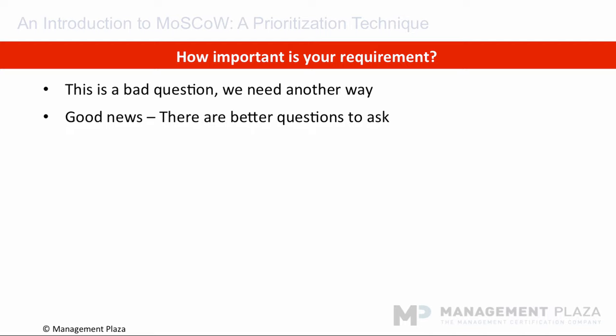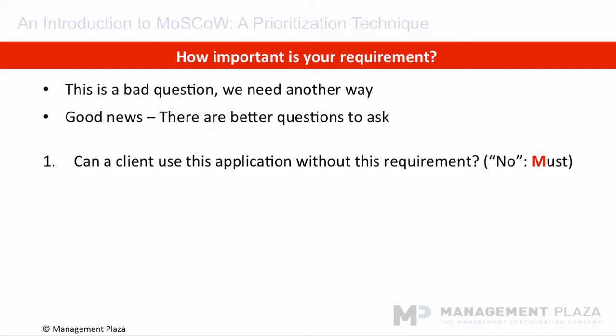The good news is that it is possible to ask the question in a different way, and the answer you get will help you and the requester see the true priority of the request. A good question to ask is: can the end users use the application without this particular requirement? The answer has to be yes or no. If the answer is no — that it cannot go live without this requirement — then this is a must. For example, user authentication or a login screen: this is a must to give people access to their data. Another example would be brakes in a car — we cannot sell a car without brakes, this is illegal. So this is a must. You can also ask: can we go live without this requirement?